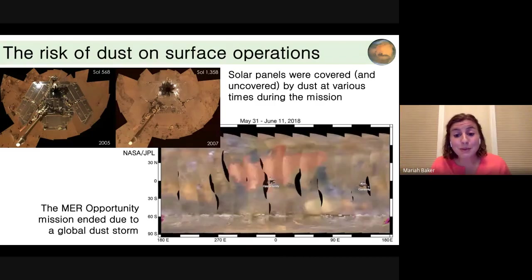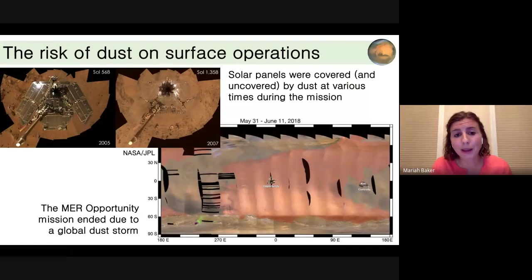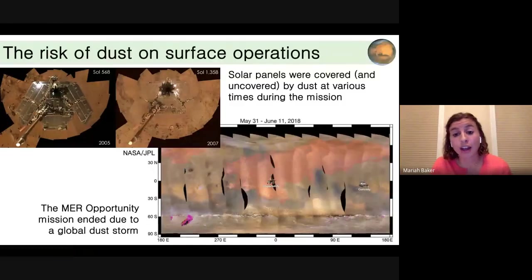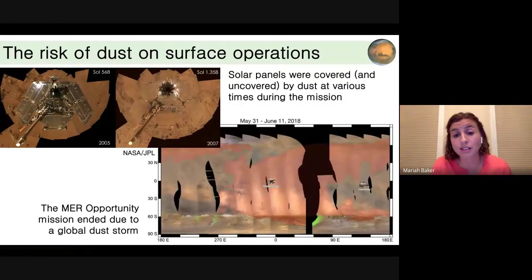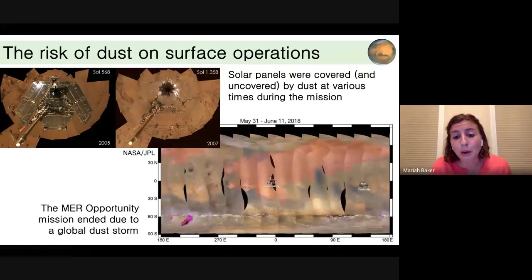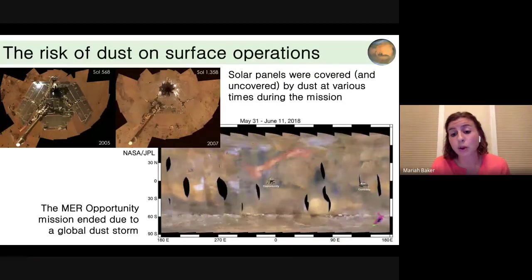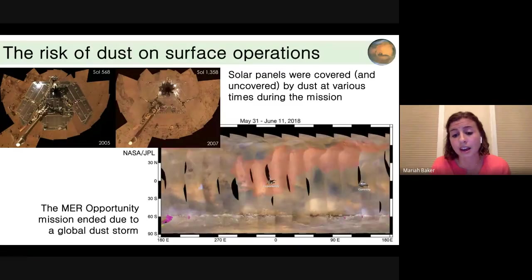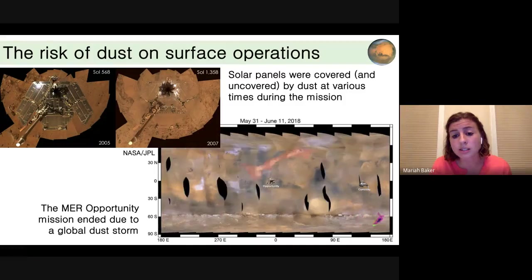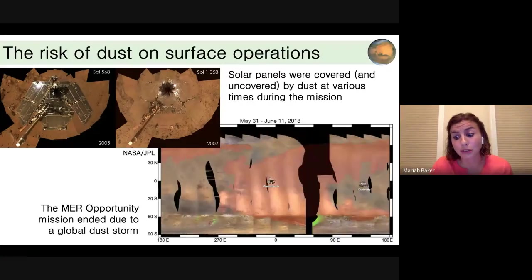These dust storm events can also be threatening. The solar panels on the MER Opportunity rover were covered and uncovered at various times across the mission, and the Opportunity rover mission actually ended due to a global dust storm that obscured the sun and the rover ran out of power. These are really important processes to understand — dust storms can be truly influential on the surface.